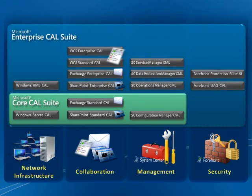The Enterprise CAL suite, which is a more comprehensive CAL suite, consists of the whole of Core CAL plus, for instance, the Enterprise CALs for Exchange and SharePoint Server, and both the Standard and Enterprise CALs for Office Communications Server, along with our Rights Management Services CAL, some of our System Center Management Licenses, and some of our Forefront Protection Licensing.